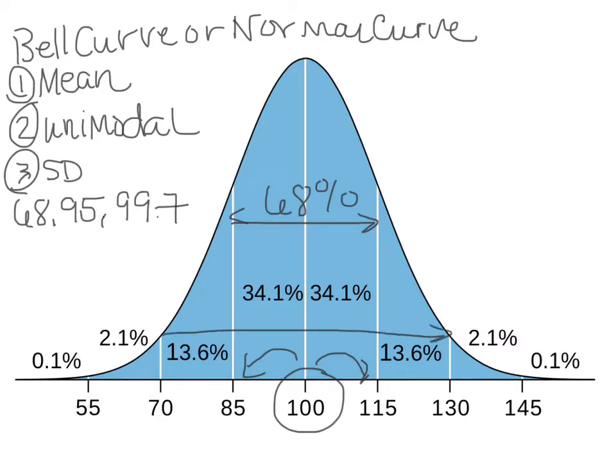95% of your scores are going to fall within two standard deviations from the mean. And then what you have left were three standard deviations from the mean, which covers about 99.7% of the scores will be within the three.